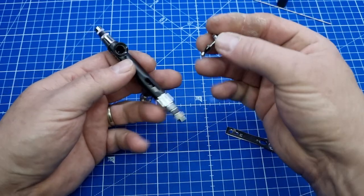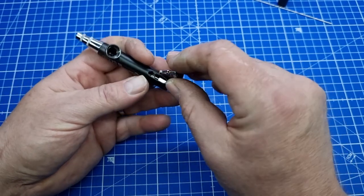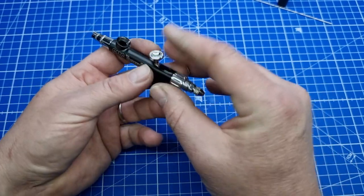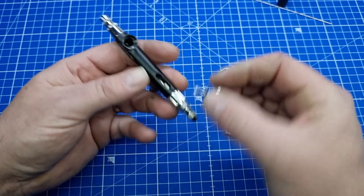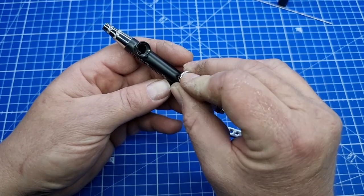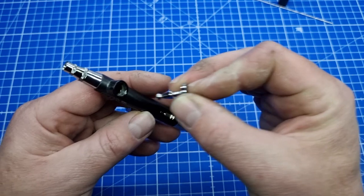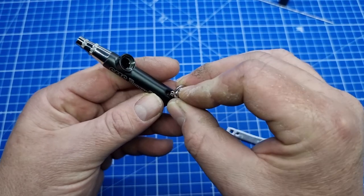Then we want to put in the trigger and lever. The trigger just pops straight in. The ball on the end of the trigger goes into where that pin is there. Make sure too that this hollow section is pointing towards the front. It can only go in one way.